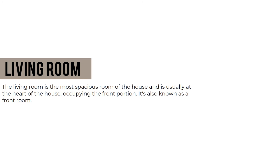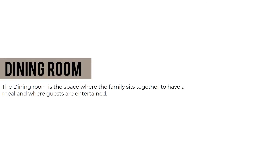The living room is the most spacious room of the house, usually at the front, also known as the front room. It serves as an entertainment area for guests and family — an active space. The dining room is the space where the family sits together to have meals and where guests are also entertained — also an active space.